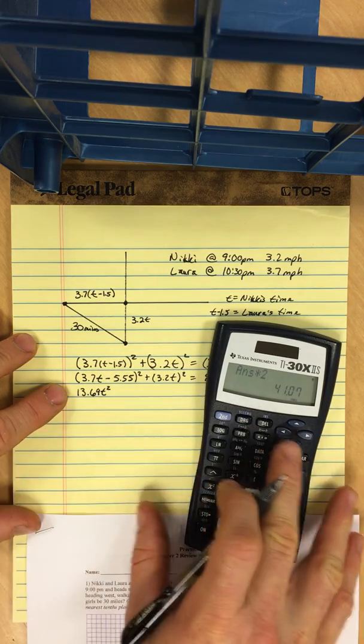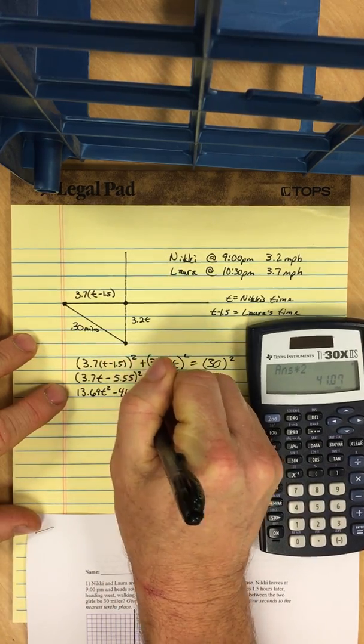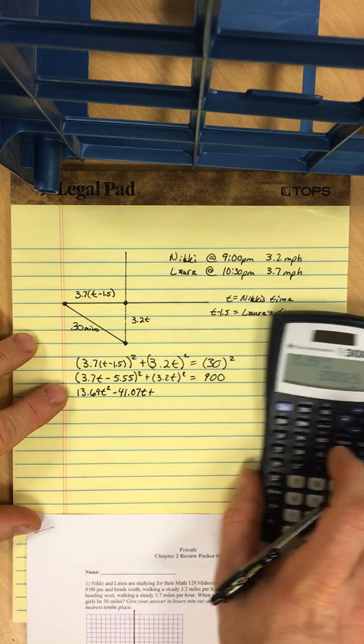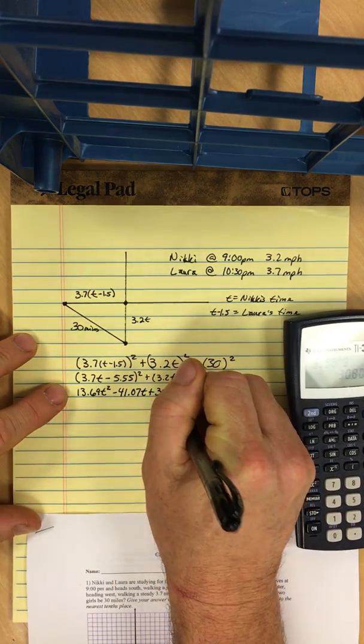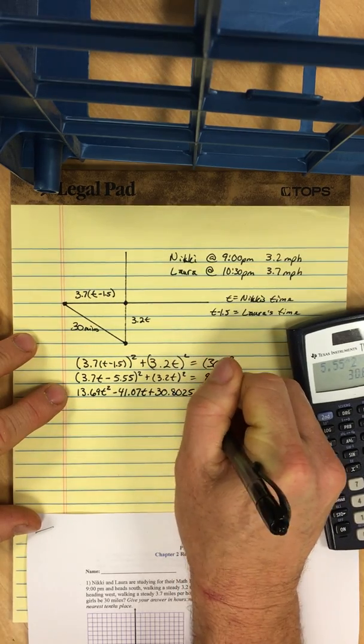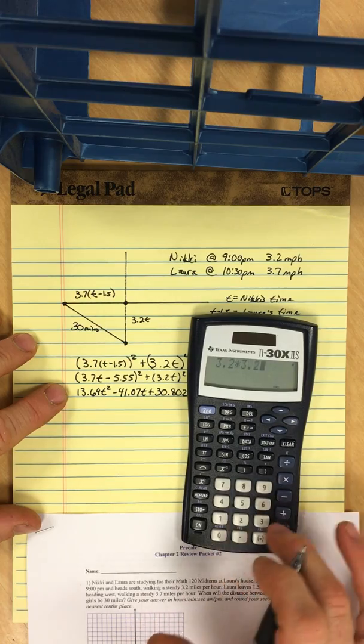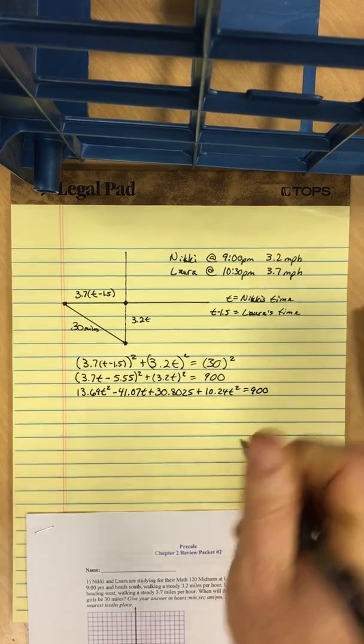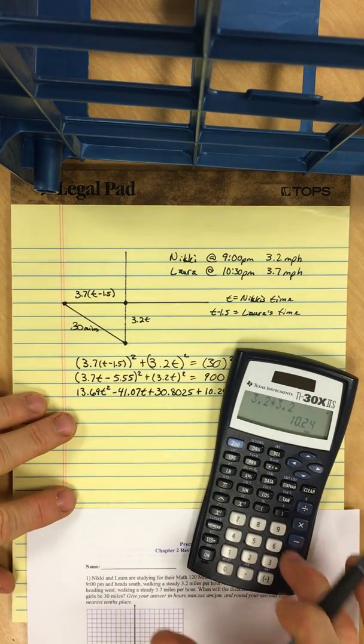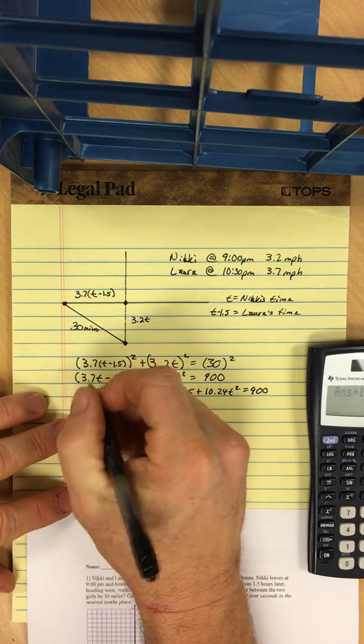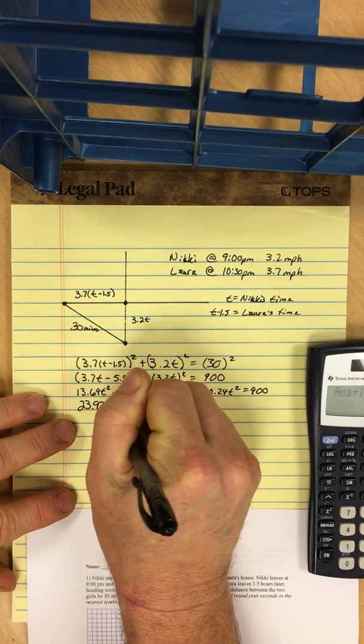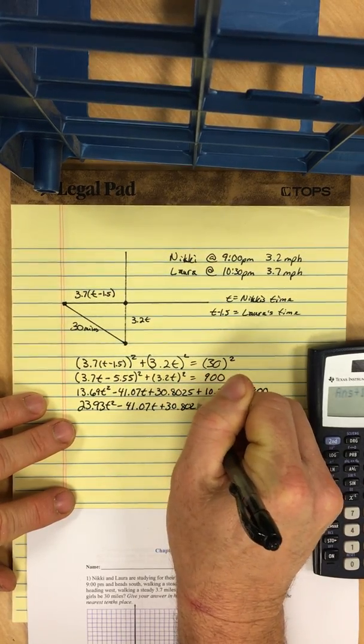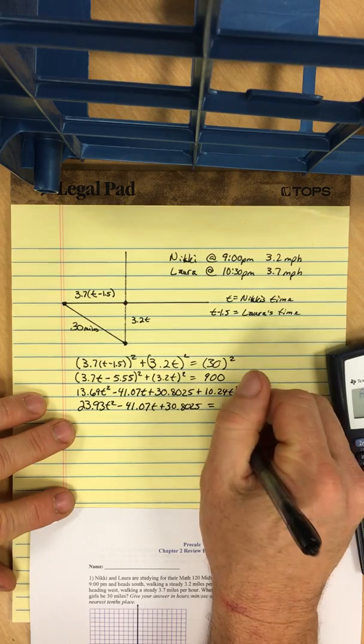So I'm gonna do 3.7 times 3.7. So I have 13.69t squared. Double those two multiply together, so 5.55 times 3.7, I'm gonna double that, and it's gonna be negative. So negative 41.07t, and then plus 5.55 squared, 30.8025, plus 3.2t squared. So 3.2 times 3.2, 10.24t squared equals 900.